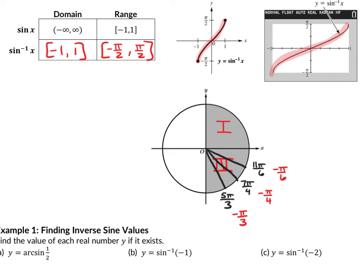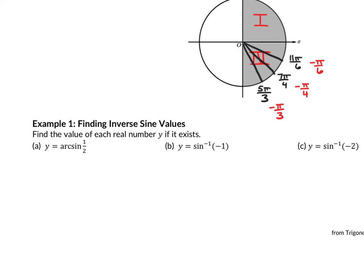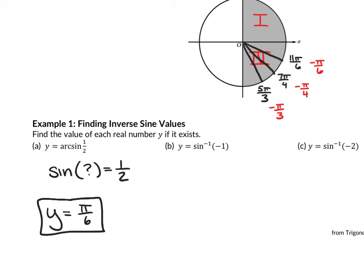Inverse sine returns the angle value that gives you the ratio plugged in — it's the backwards version of what you did on your GIMKIT. So if y = arcsin(1/2), we're asking: what angle must I plug into sine to get 1/2? Sine is the second coordinate on the unit circle, so we look for a y-coordinate of 1/2. That's π/6. So y = π/6, because sine of π/6 is 1/2. We're just working backwards — the output is an angle rather than a trig ratio.